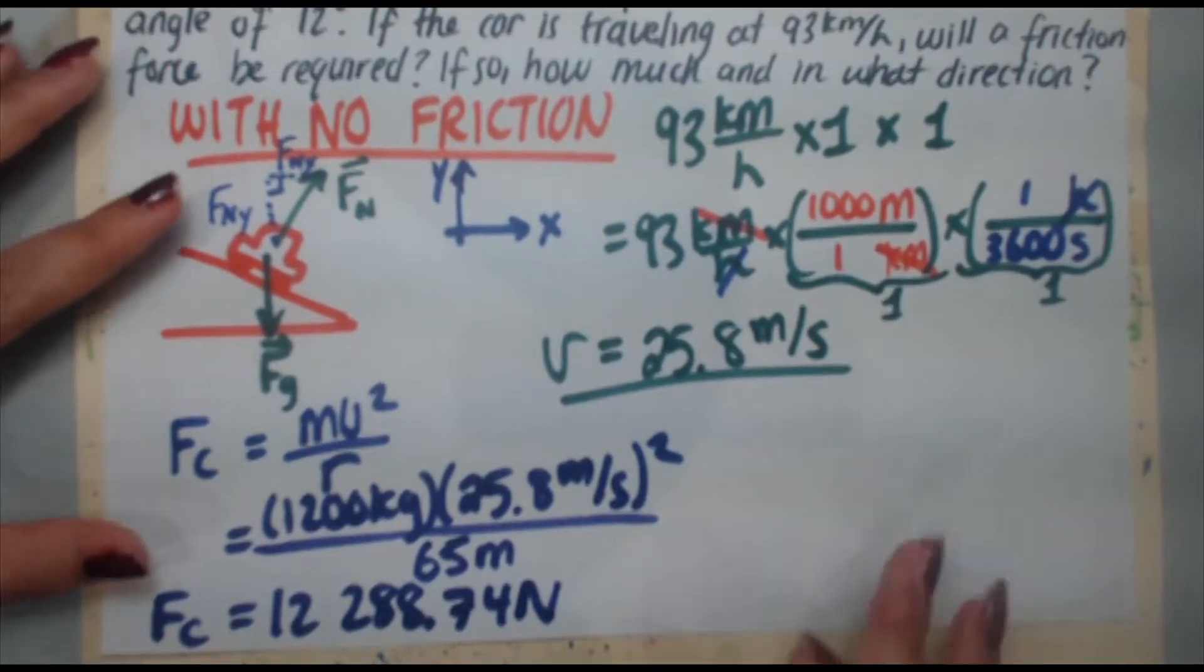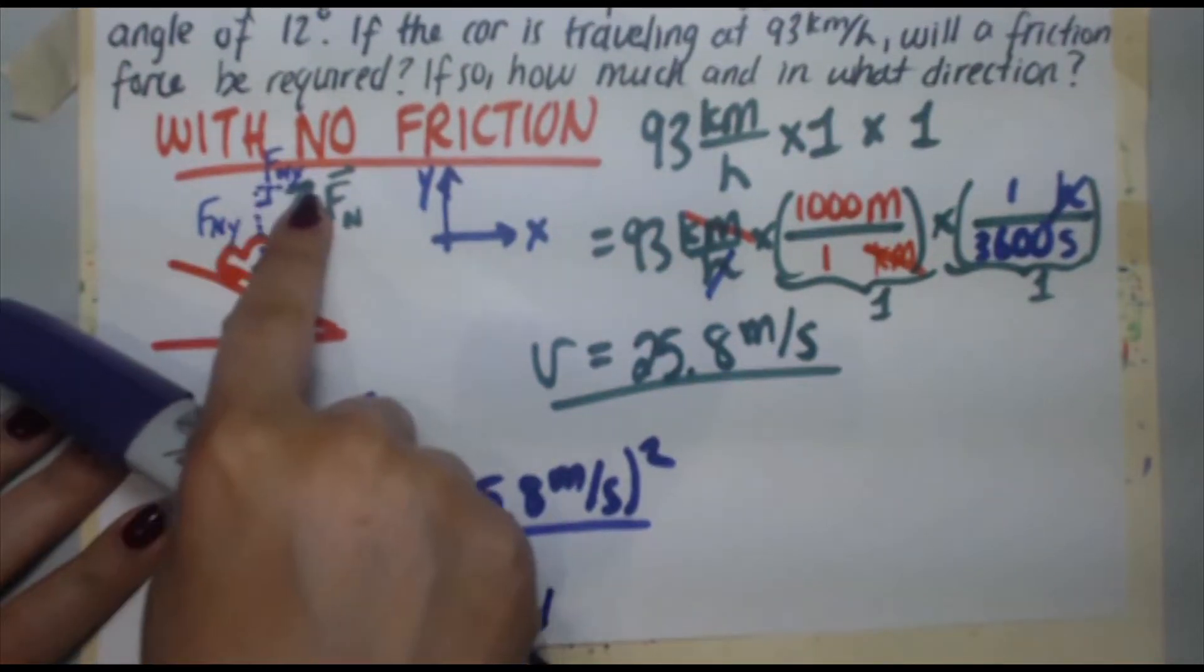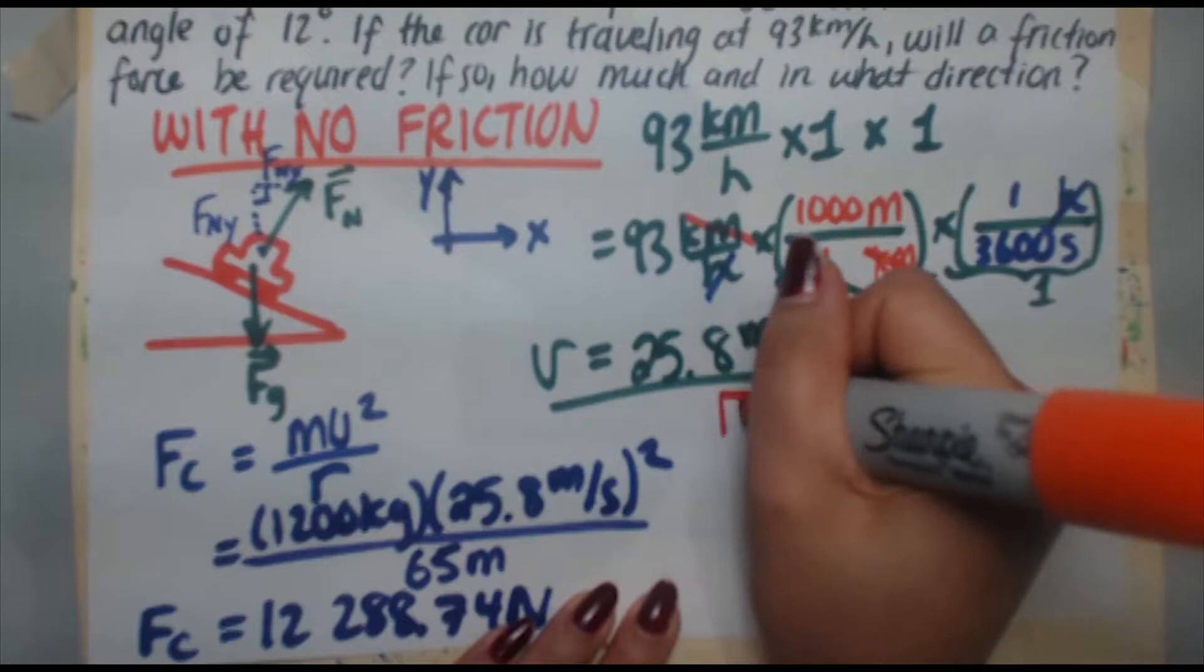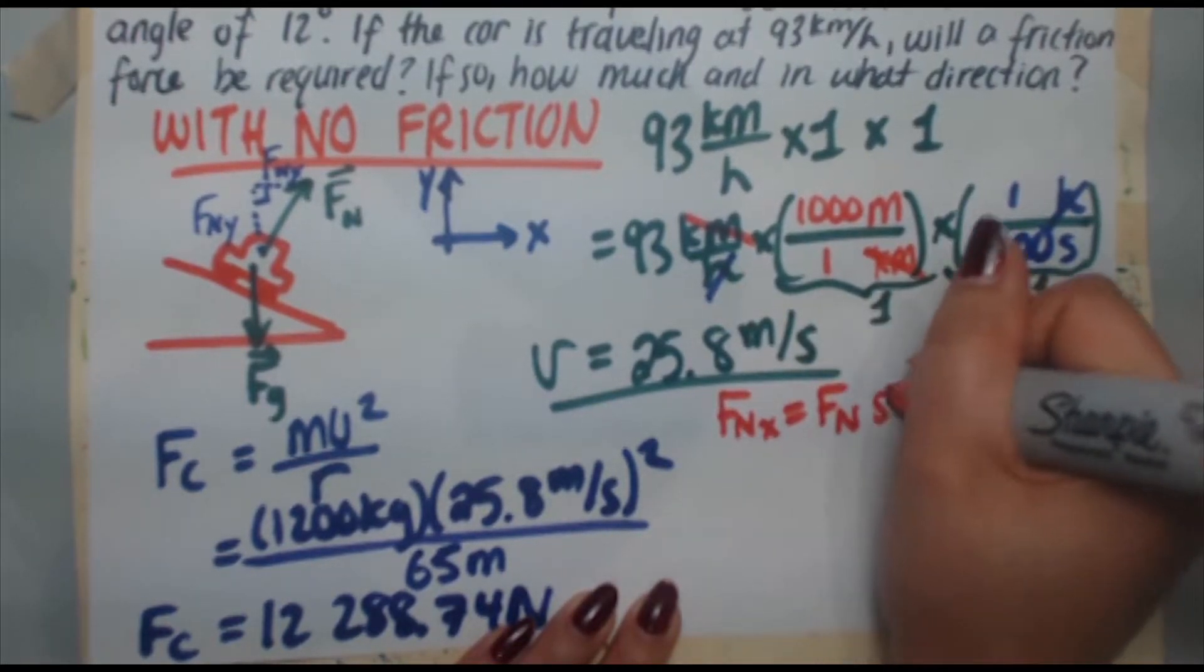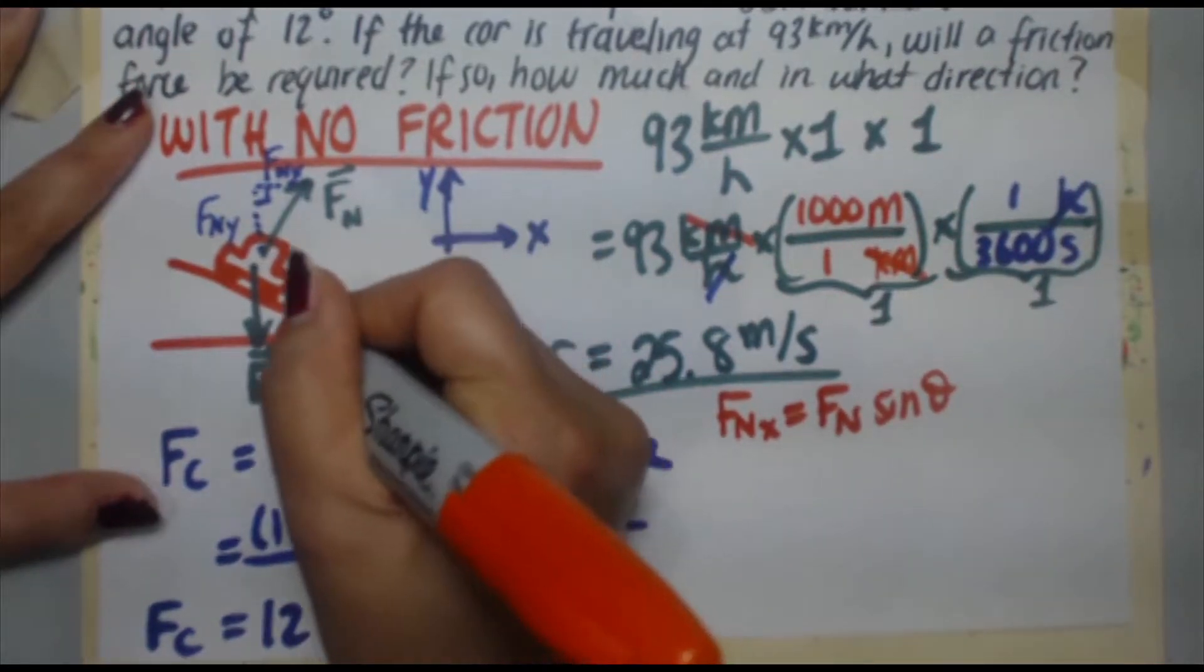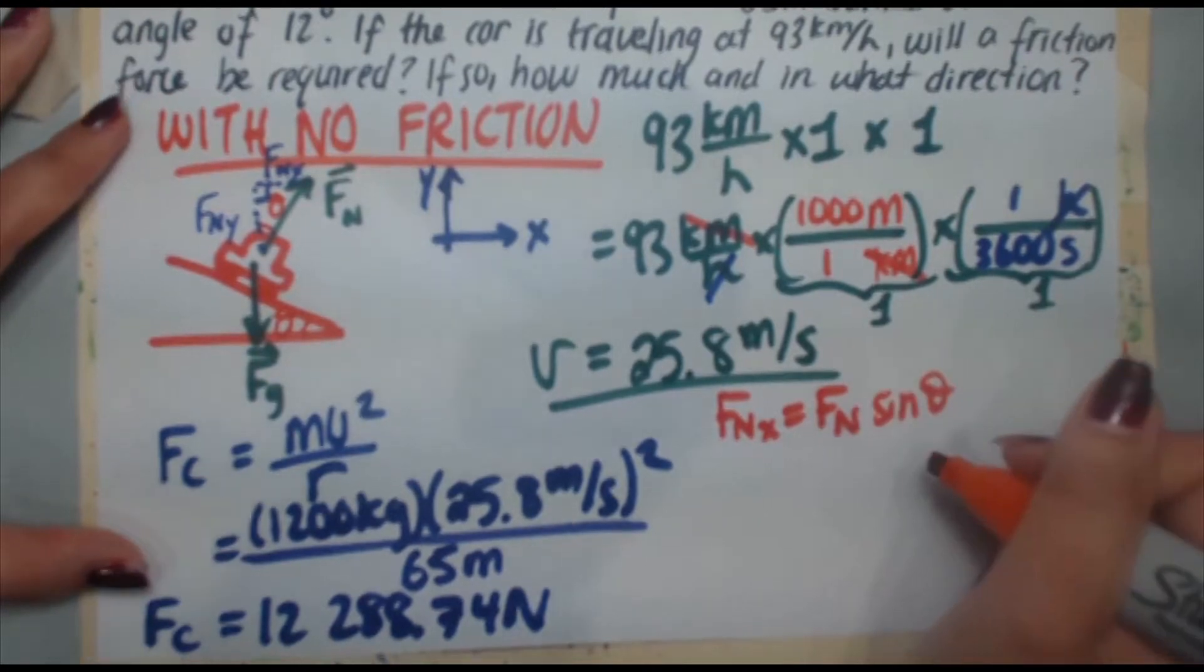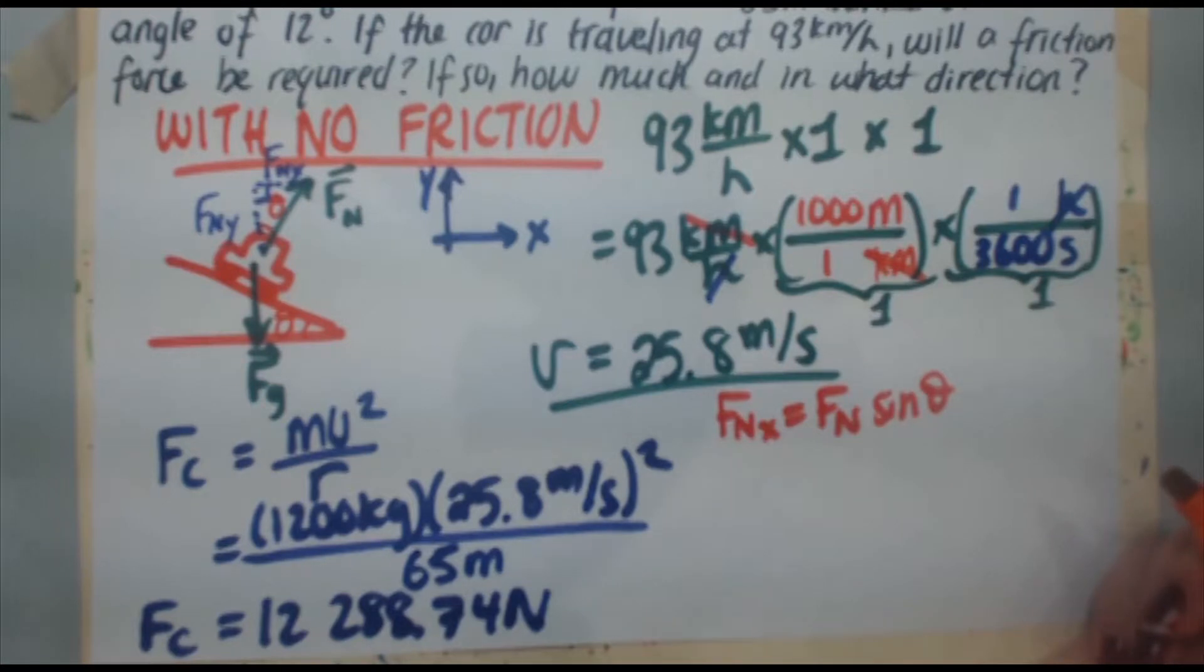Now, like I said, if no friction is required, then this Fc has to be equal to Fnx, because with the no friction, this is the only force pointing in the center pointing direction. So here we go. I'm going to find Fnx. Fnx is equal to Fn sine theta. So where's my theta coming from? This angle theta, which is the banking angle, that's the same angle you've got right up there. You've got theta. So Fnx is Fn sine theta.